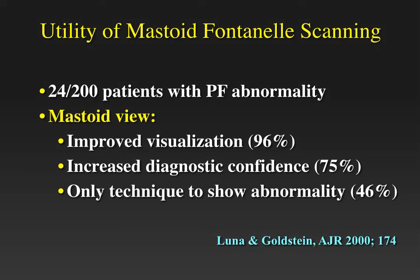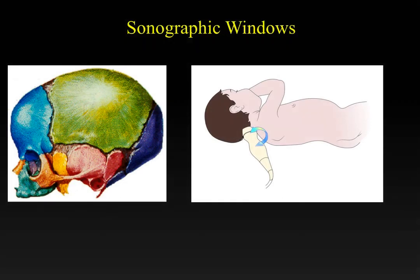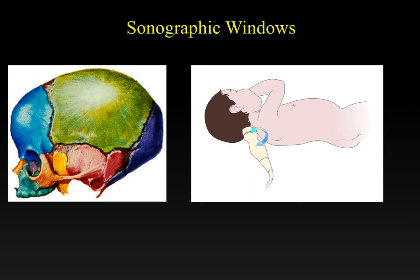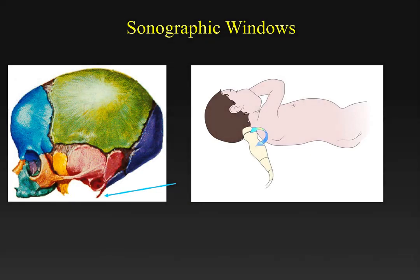The last alternative scanning location is the foramen magnum. To scan these babies, we place them in lateral recumbent position with their head slightly flexed. Using a microcased transducer, we place it in the sagittal midline location just under the occipital protuberance, then aim superiorly to approach the posterior fossa. The transducer can be rotated 90 degrees for another view. We have performed this view in very sick premature intubated babies with the help of neonatal nurses without any complications.